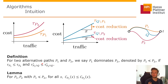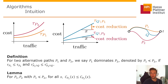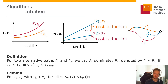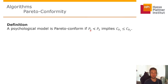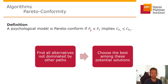There is one last issue to resolve: maybe the psychological model assigns a different X_P2 to P2 than X_P1 to P1. We resolve this by defining a property of psychological models called Pareto conformity. A psychological model is Pareto conform if dominance implies lower overall costs. Our SAP problem then reduces to finding all non-dominated paths.